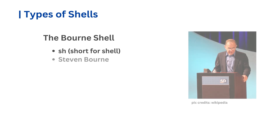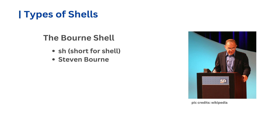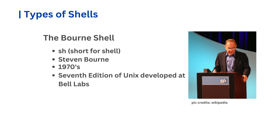The original Unix shell, called SH, short for Shell, is also known as the Bourne shell after its creator, Stephen Bourne. It was introduced in the 1970s as part of the 7th edition of Unix developed at Bell Labs. Although SH is considered basic by today's standards, it was quite advanced then.